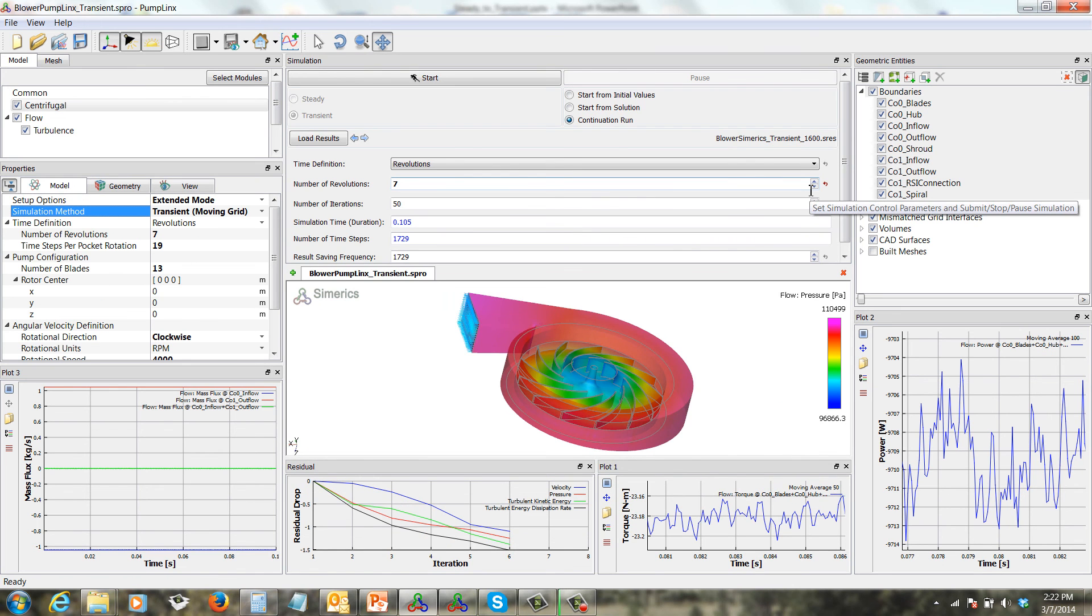In the simulation panel, you can see that the number of revolutions is 7, iterations is a default of 50, simulation time or duration is 0.105, number of time steps we have at 1729. So now we'll start from solution, the steady-state solution, and we're ready to launch the solver.